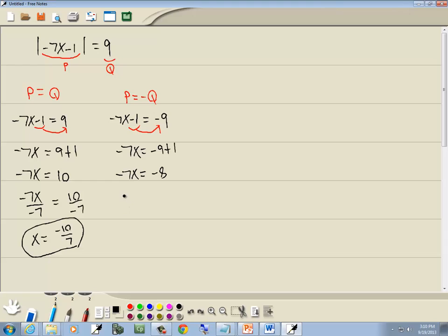Last step, divide both sides by the number in front of our x. So we're going to divide both sides by negative 7. Those negative 7s will cancel and we've got x equals. And these negatives will cancel and we've got x is equal to 8 sevenths. And those are our answers.